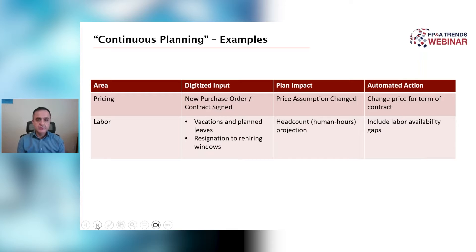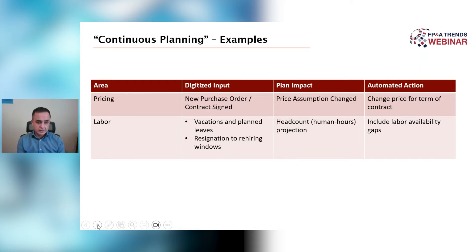Here are some examples of continuous planning and the implementation within our organization. Like any other organization, we use purchase orders and sign new contracts. In a typical planning cycle, the price of a product is changed every quarter or once a year, once the team goes in and changes it manually. Through our process, we created a loop where whenever a purchase order or a new contract is signed, that feeds directly into the plan and the plan is updated. It's a very small step, but it takes out human intervention and makes the plan more agile.